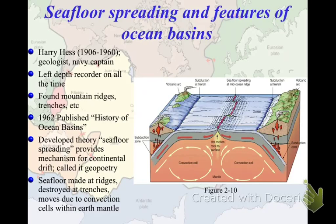Basically, this took the idea of continental drift and put it together with the mechanism of how these features are made — where seafloor is made at the ridges and destroyed at the deep ocean trenches — and talks about the convection cells within the Earth's mantle. Together with continental drift theory, this became what we know as plate tectonics. The general idea, as you can see in this figure, is that hot molten rock goes to the surface and comes out along the ridges as new crust. That new crust is pulled down into the trenches through friction with the convection cells, where it is destroyed and recycled again.